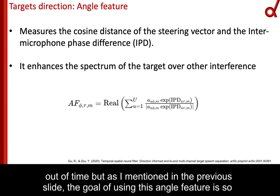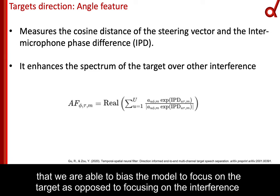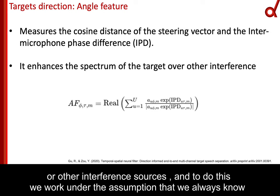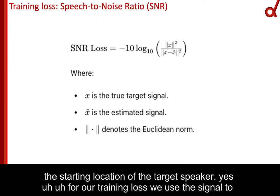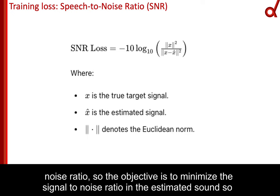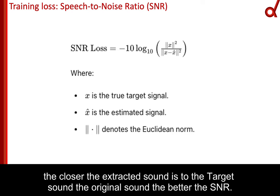The goal of using the angle feature is to bias the model to focus on the target, as opposed to the interference sources. To do this, we work under the assumption that we always know the starting location of the target speaker. For our training loss, we use the signal-to-noise ratio. The objective is to minimize the SNR in the estimated sound, so the closer the extracted sound is to the original target sound, the better the SNR.